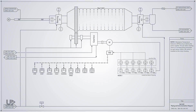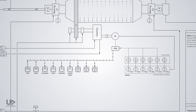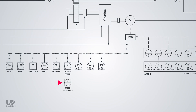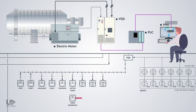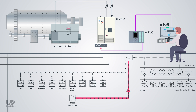The other piece of data that the VSD should receive from the control system is the motor speed reference. The operator will enter the desired speed in the human-machine interface. This speed reference will be processed in the PLC logic and, through a high-speed analog output card, will be sent to the VSD.